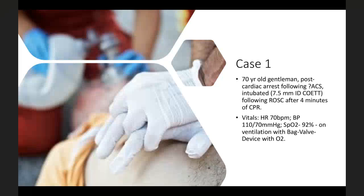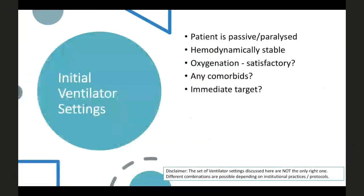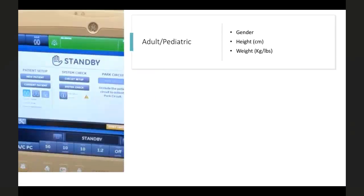Initial ventilator settings depend on whether the patient is passive or paralyzed. In this case the patient is passive and hemodynamically stable. He will be in control mode ventilation, planned for cath lab for coronary intervention. The target is maintaining ventilation until the primary pathology settles down.